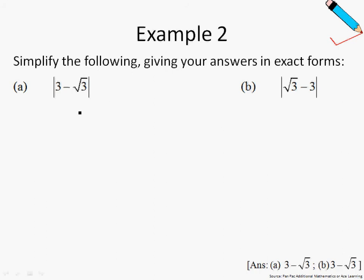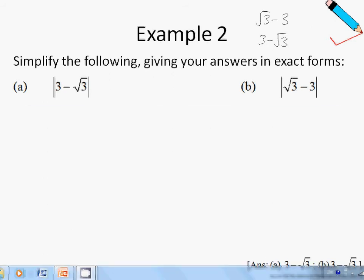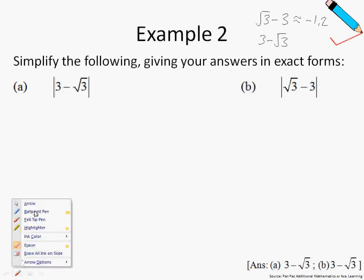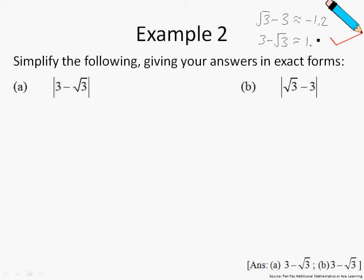In Example 2, try pressing these two values into your calculator and see what answer you get. If you press the first expression into your calculator, you will see it gives a negative value — approximately negative 1.27. Whereas the second value will give you approximately positive 1.27. This means what you see inside the modulus sign in the first expression is a negative value, whereas in the second it is a positive value.